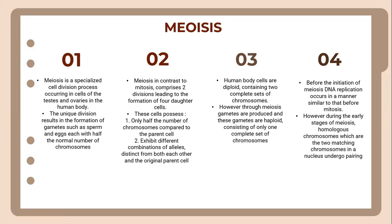These daughter cells exhibit different combinations of alleles — alleles distinct from both each other and the original parent cells. Human body cells are diploid, containing two complete sets of chromosomes. However, through meiosis, gametes are produced, and these gametes are haploid, consisting of only one complete set of chromosomes.